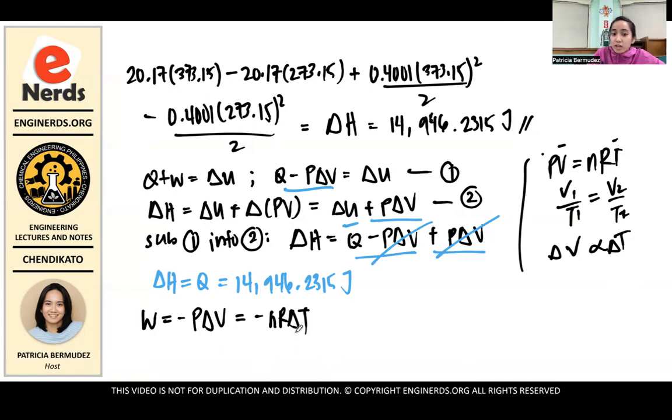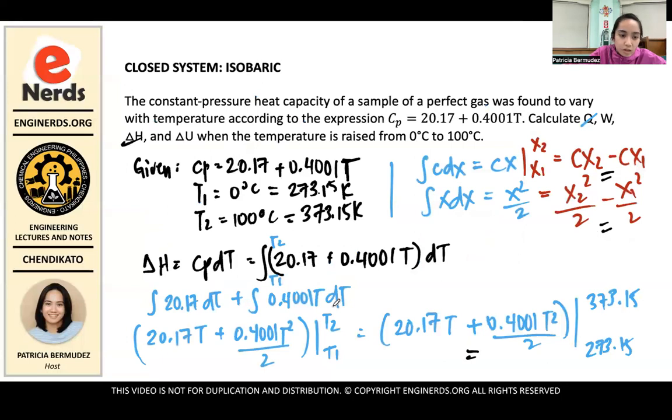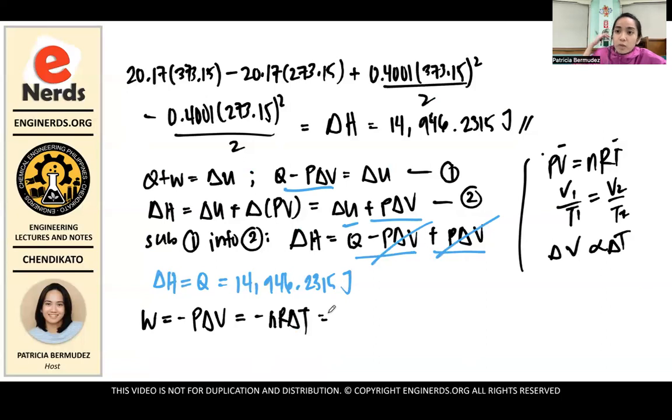And since these two factors, like P is constant and nR is constant, therefore, we can rewrite this as negative nR delta T using this equation. Because we know that the change here is equal to the change here. And your P is constant, your N and R are constant. So we can rewrite this as this. So another formula for work in an isobaric system is negative nR delta T. So substituting we have, we assume that, since we're not given the number of moles, we can just assume 1 mole. Or you can just leave the units as per mole. So the N will cancel.